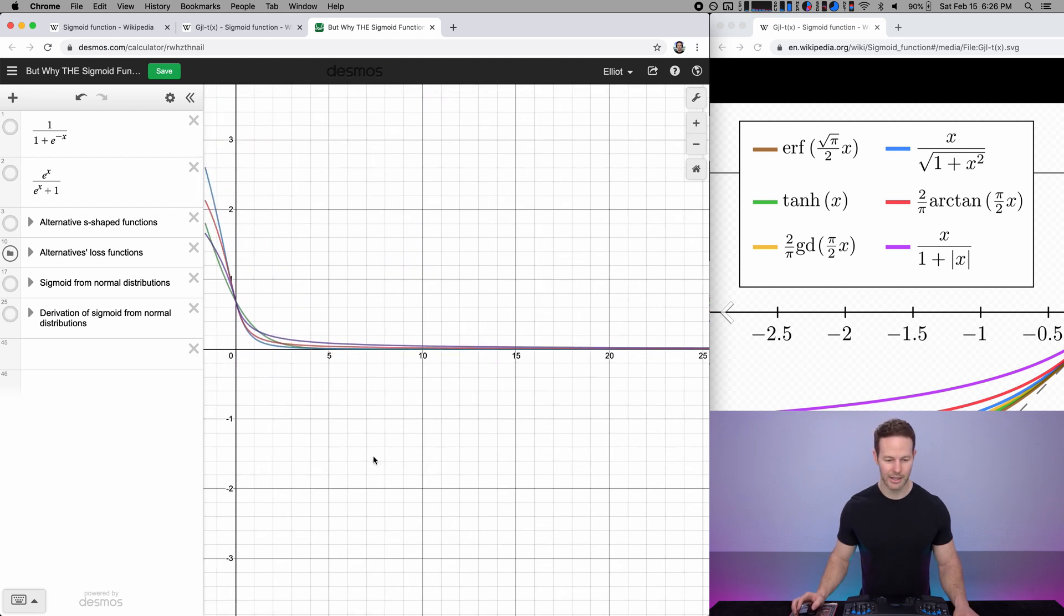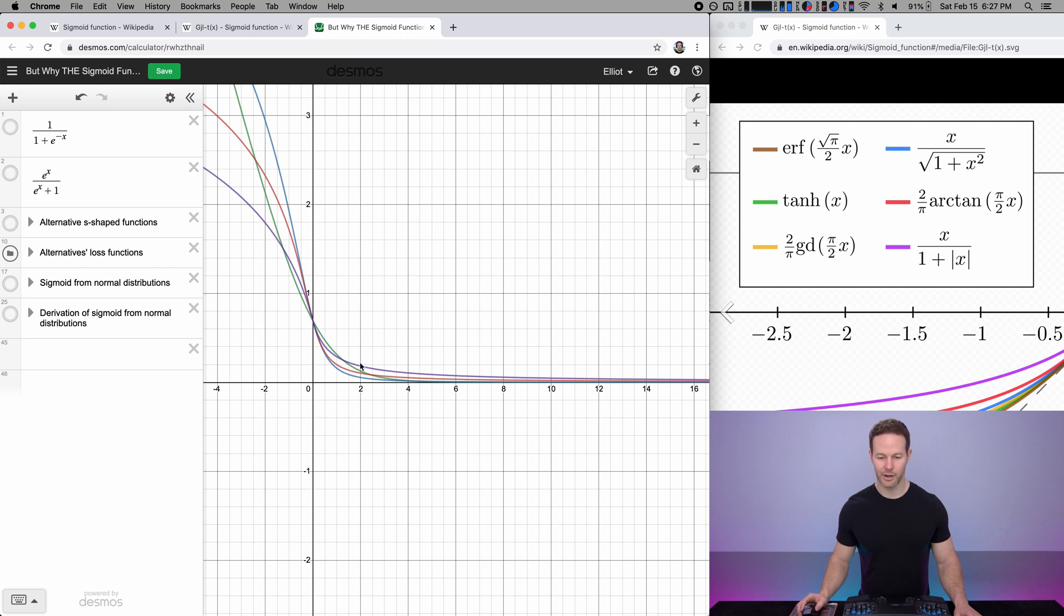And if we zoom in to the right, the loss kind of goes towards zero, and it flattens out. And that's okay, because that's what we expect. As our loss goes to zero, we're already doing the correct thing with that output. So we don't need much of a gradient.